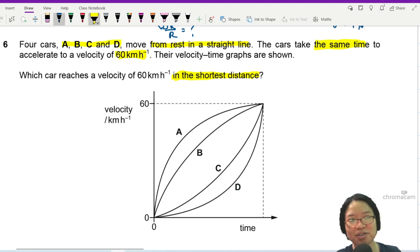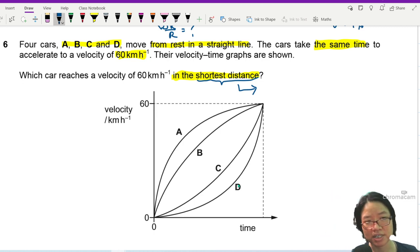I guess someone saw my lecture and decided to set the question. But this one has a short twist here. It wants the shortest distance. So how do we deduce information about distance from a velocity-time graph?